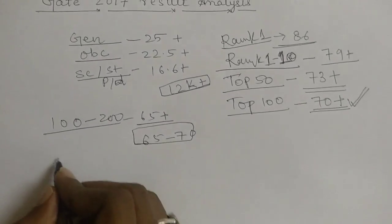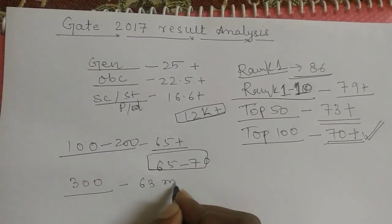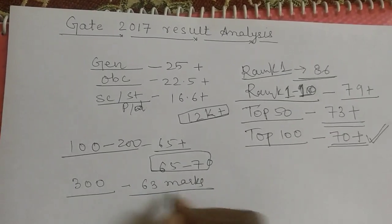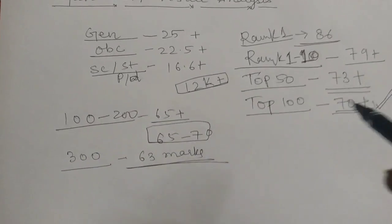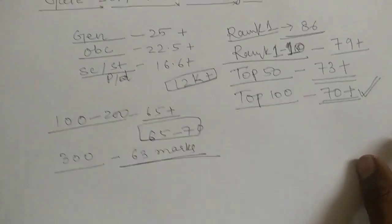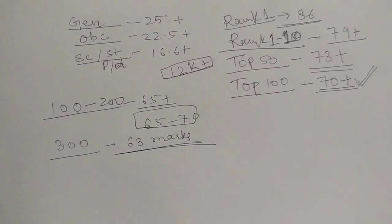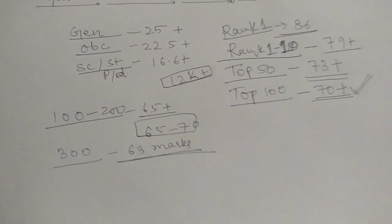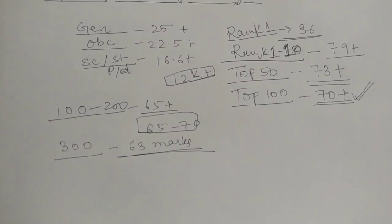Similarly, to get 300 rank, the cutoff was 63 marks. Guys, I am talking about these normalized marks. It's not of any set 1 or set 2, it's the normalized marks of both the sets. So, if you want a rank in top 300, you should have got 63 marks in GATE 2017 CS paper.